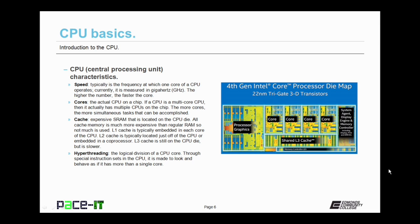Then there's cache. Cache is expensive static random access memory that is located on the CPU die. All cache memory is much more expensive than regular dynamic random access memory, so not much of it is used. Cache is broken into three levels. L1 cache is typically embedded in each core of the CPU. L2 cache is typically located just off of the CPU or embedded into a coprocessor. L3 cache is still on the CPU die, but it's a little bit slower than L1 or L2 cache.